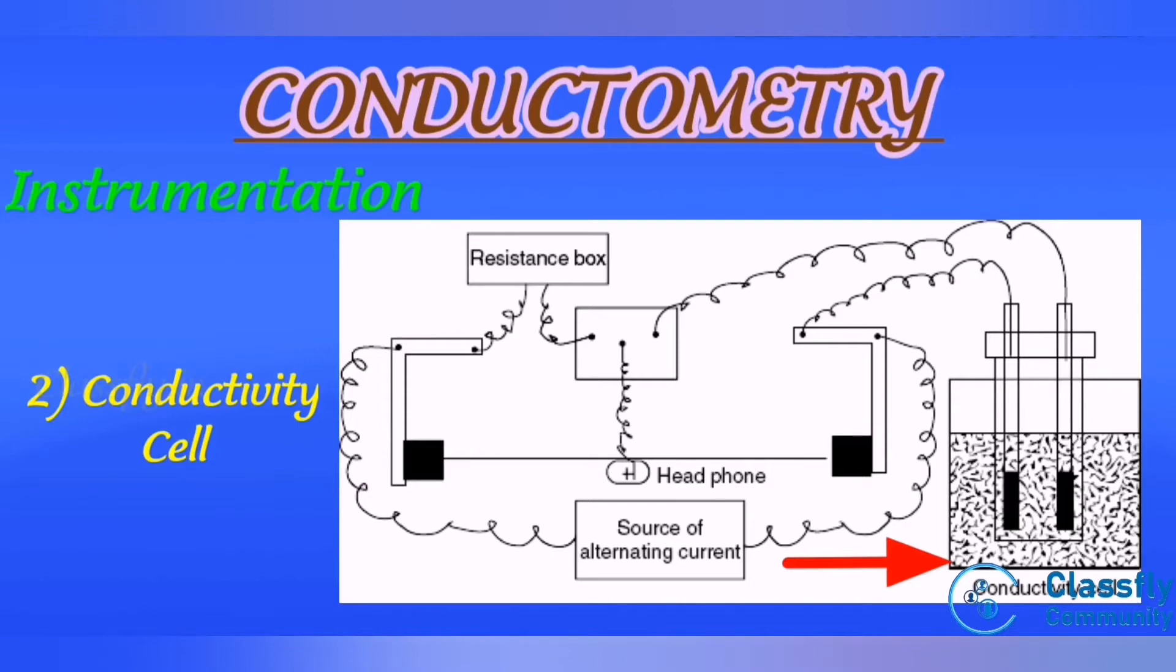Third point is electrodes. Platinum sheets, each of one centimeter square, are fixed at a distance of one centimeter. The surface is coated with platinum black to avoid polarization effect and increase the effective surface area.